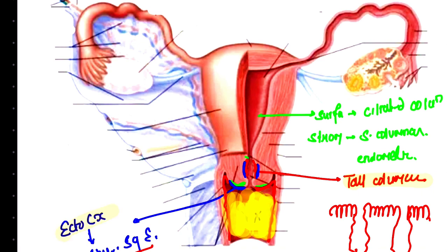So to summarize: we talked about the uterus, the cervix, and the vagina. The vagina also consists of stratified squamous epithelium. The type of stratified squamous epithelium here is non-keratinizing.